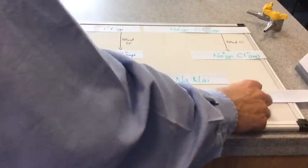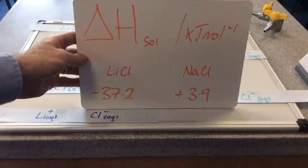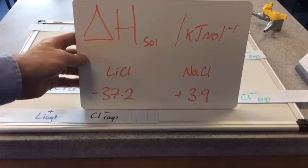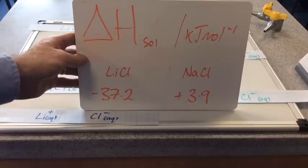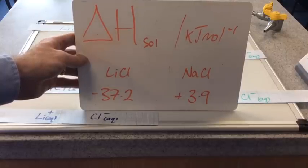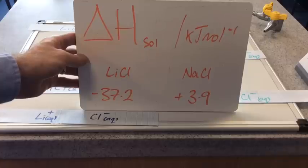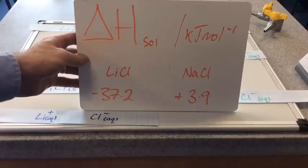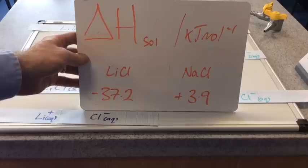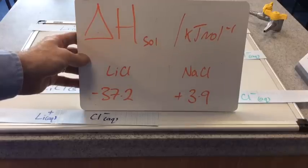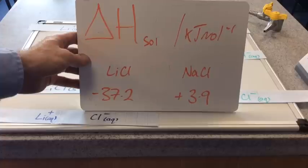Before we go any further, I need to share the data. The enthalpy change of solution for lithium chloride is minus 37.2 kilojoules per mole, whereas for sodium chloride it's plus 3.9 kilojoules per mole — so we've got an exothermic process and an endothermic process. The easier part is factoring in relative ionic sizes and charges and their knock-on effect on enthalpy changes of hydration and lattice enthalpy; the difficult bit is piecing that together to explain the data.